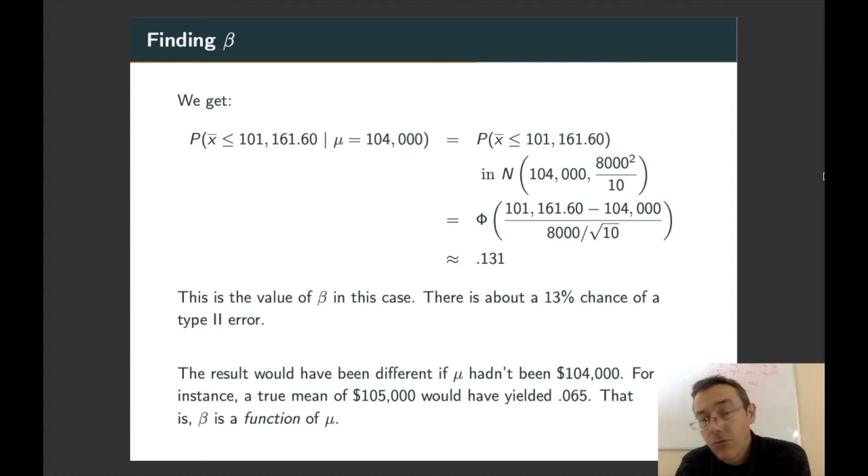For example, if the true population mean had been $105,000 instead of $104,000, the probability of a type 2 error would have been 6.5%. We summarize this by saying beta is a function of mu. So as the population mean changes, the probability of that type 2 error changes as well.